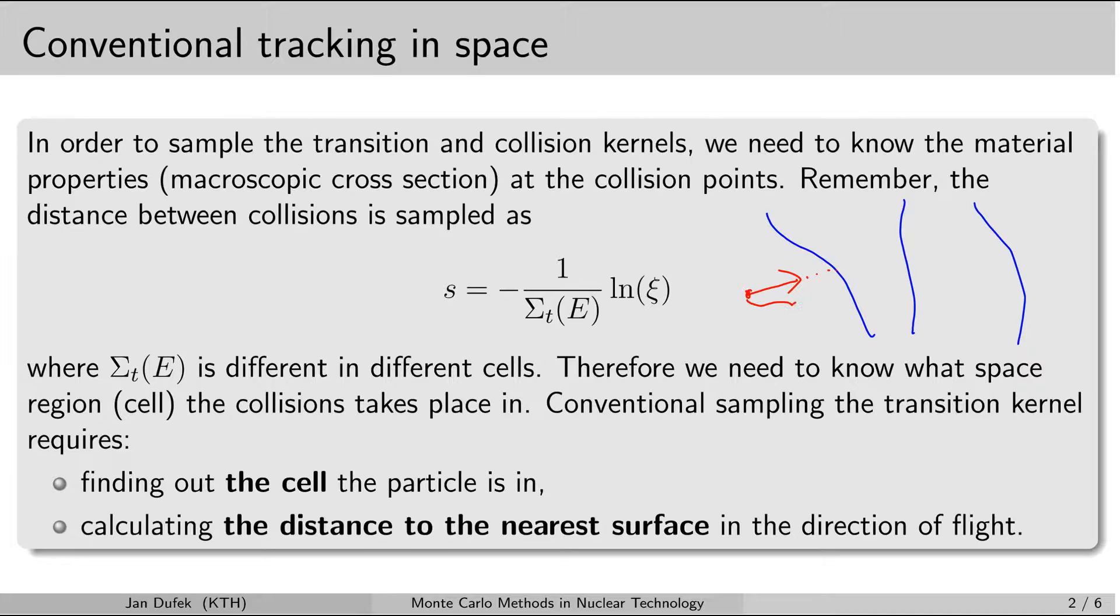We always need to check whether the distance to the interface L is smaller or larger than the distance that we calculate according to this formula. If the distance to the interface is larger than S, then we can accept the distance to the next collision. If this distance to the interface is smaller than the number we obtain from this formula, then we have to stop the neutron at the surface, at the interface between two cells, and generate a new distance to the collision based on the new total macroscopic cross-section in the new region. During the neutron transport simulation, the Monte Carlo code needs to calculate this distance to the surface.